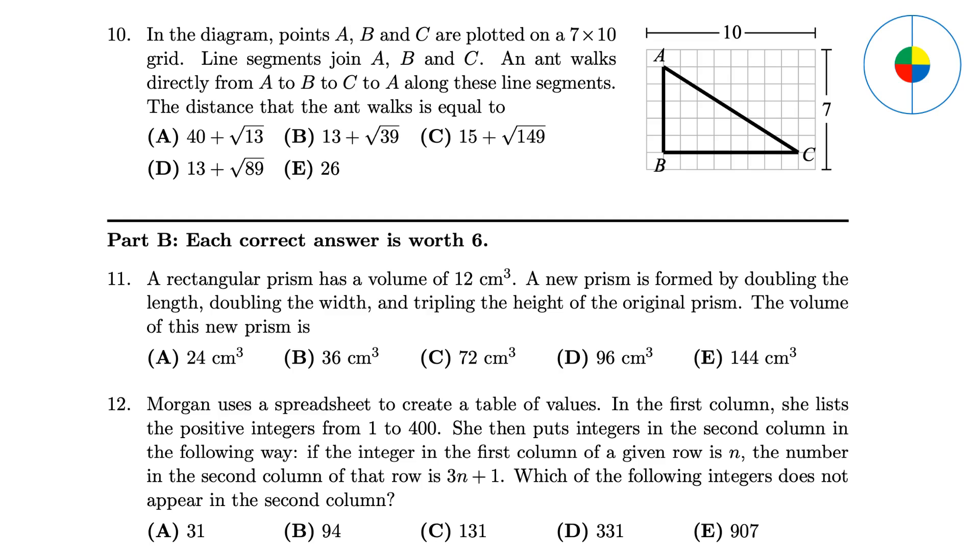Part B: Medium Questions. Question 11 - The volume of the new prism is the old one times 2, then times 2, then times 3. The answer is 144. Question 12 - You can subtract 1 from all the choices and see which one is not divisible by 3. The answer is C.